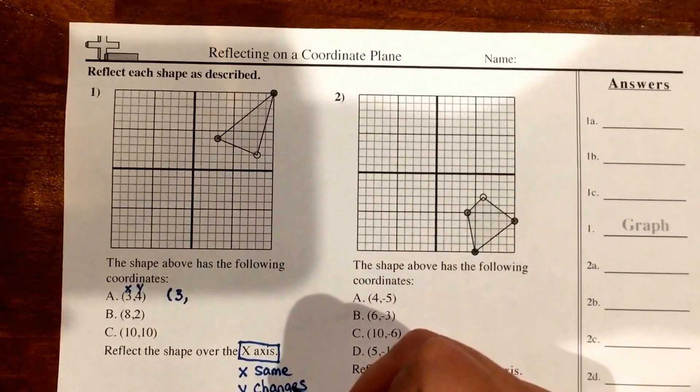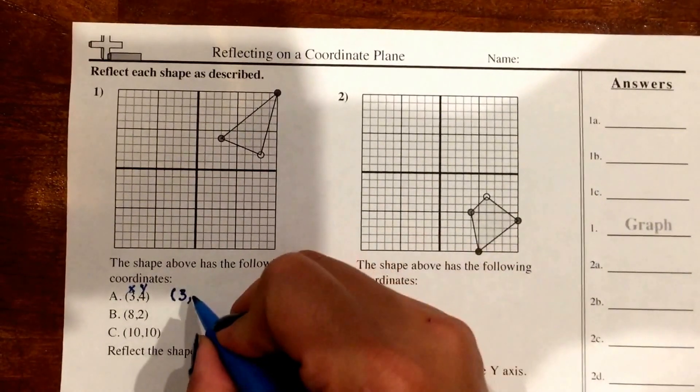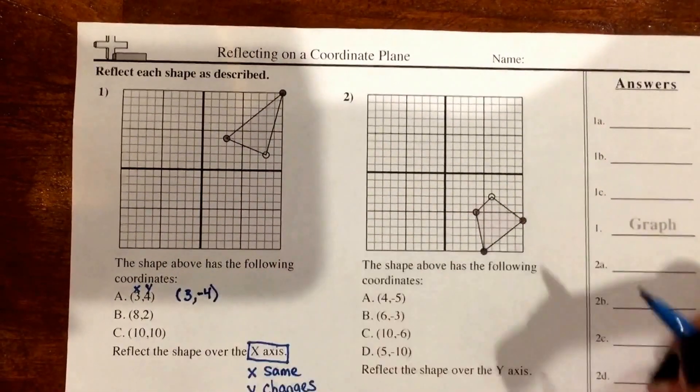If my y-coordinate is positive 4, I know that, based on my rules, I need to change that. So that's going to do its opposite, which is a negative 4.